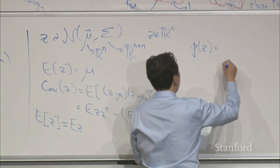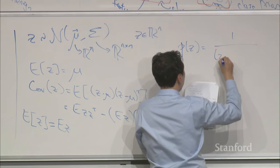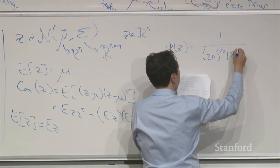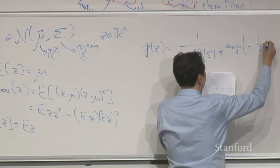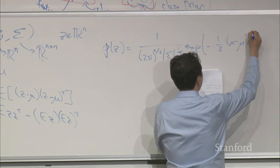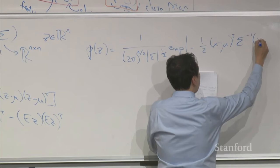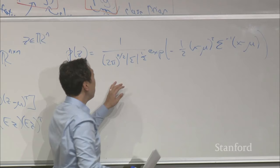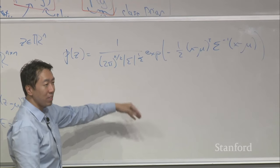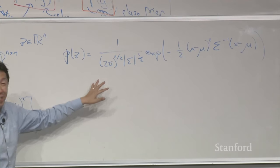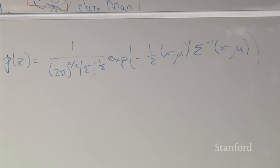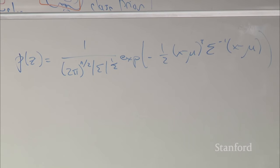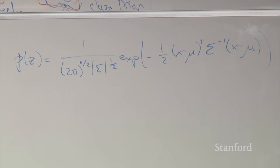The probability density function for a Gaussian looks like a specific formula. This is one of those formulas that when you're implementing these algorithms, you use it over and over. Very few people memorize it at first — you just look it up every time you need it. But when you use it enough, you end up memorizing it. Let me show you some pictures of what this looks like, since that might be more useful.